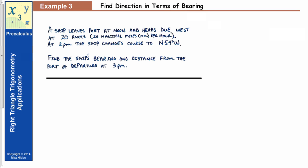The third problem asks us to find a direction in terms of bearing. A ship leaves port at noon and heads due west at 20 knots. At 2 p.m. the ship changes course to north 54 degrees west. Find the ship's bearing and distance from the port of departure at 3 p.m.